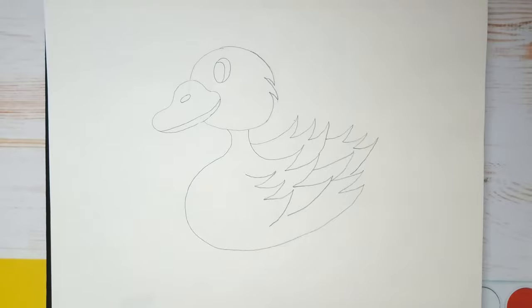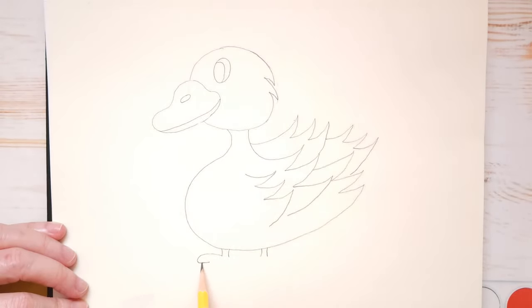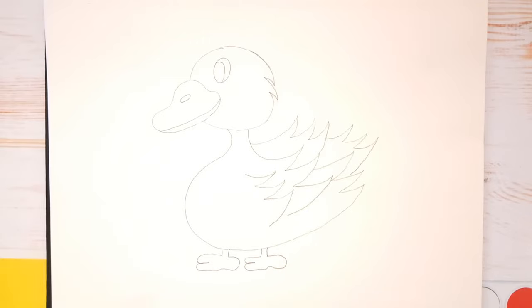Now the last thing we're going to do is draw his little feet. He's got little, little feet. So about here we're going to draw two little lines. And about here two little lines. And for his feet, we'll draw one round toe, two round toes, a little arch to make his ankle. And we'll do the same thing here. One little toe, two little toes, a little arch, and his ankle.